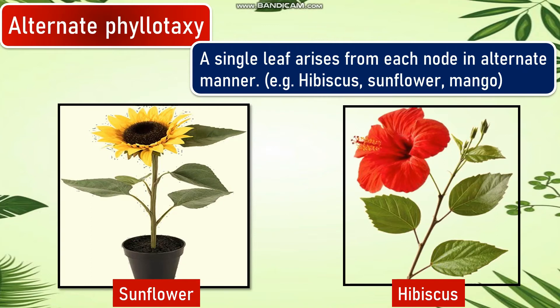Alternate phyllotaxy: a single leaf arises from each node in an alternate manner. Examples include hibiscus, sunflower, and mango. As you can see, only one leaf arises from each node, and each leaf alternates with the others, as also seen in hibiscus.